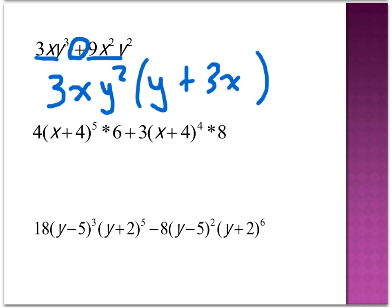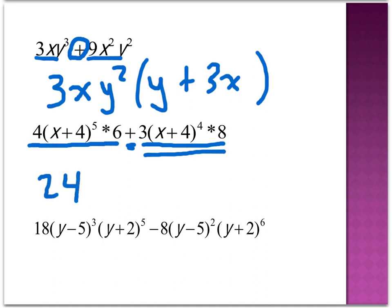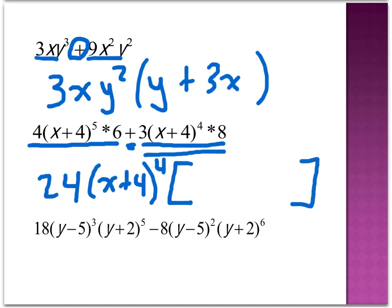This type of problem shows up a lot, especially with the product rule. The addition sign separates the terms, and I need to find what's common to both. Here I have 4 × 6 for the first term and 3 × 8 for the second, both equaling 24, so 24 is a common factor. Then I look at (x+4)⁵ and (x+4)⁴ and realize I can factor out (x+4)⁴ from both. Because the common factor contains parentheses, I use brackets for what's left inside. Dividing the first term gives (x+4), and dividing the second term — everything cancels — so I'm left with plus 1. The bracket simplifies to (x+4+1), which is (x+5).